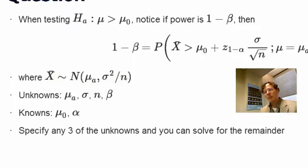So the point I'd like to make is that the unknowns in this equation are mu_a, sigma, n, and beta, or equivalently to beta, the power that you want. The knowns are mu naught, and usually you know alpha, you know exactly which type 1 error rate that you would like.